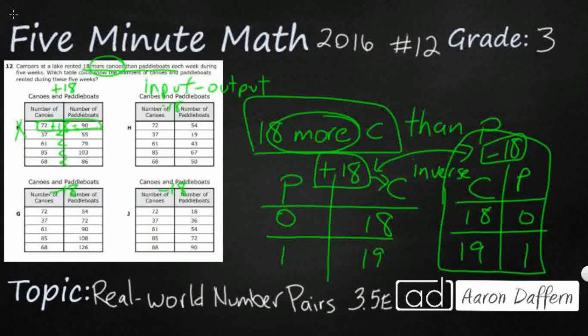So we do have, at least on H, we do have our canoes as greater than our paddle boats. So that's a good step right there. And 72 minus 18, does that make 54? Let's see. 72 minus 18. We have to regroup there. So that's going to be 54. It does look like that might be minus 18.